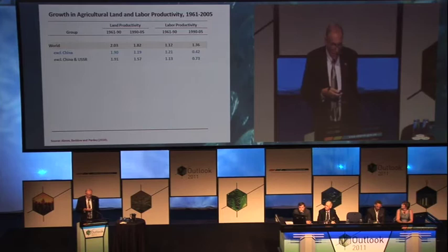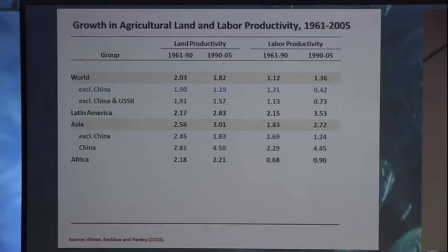If we look at total output per unit of land or per unit of labour, similar story. In the world as a whole, land productivity growth rate fell from 2% before 1990 to 1.8% after that. Labour productivity grew faster — that's because labour is getting out of agriculture. But if you take China out of the world, we've got the growth rate of both land and labour productivity slowing down after 1990. If you take out China and the former Soviet Union, you counteract that a little bit, but the general story is of a slowdown, with the exception of China.